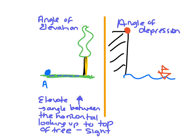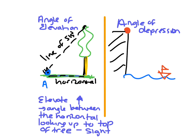Let's imagine this is an eyeball looking up to the top of the tree, and here's the horizontal. This is the line of sight — where you are looking to see the top of the tree. The angle is measured from the horizontal going around up to the top of the tree, so it's this angle in here.